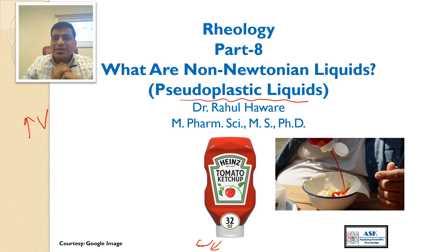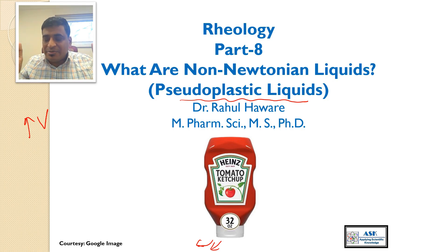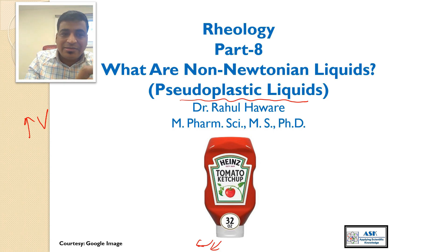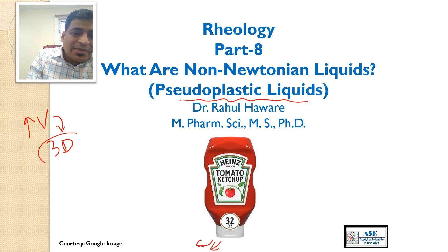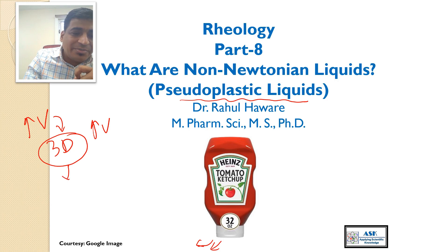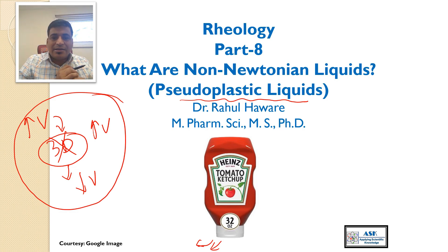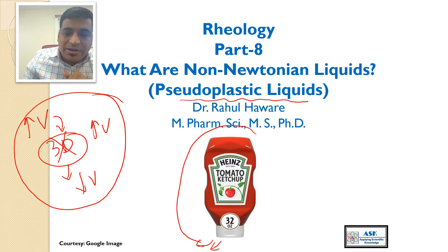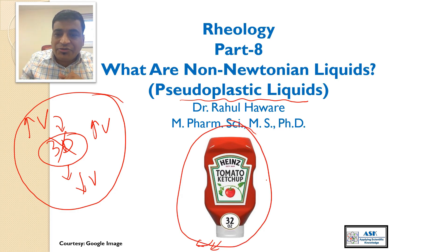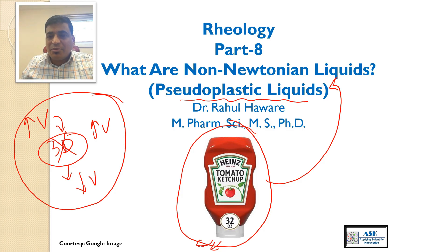When you are keeping it in the refrigerator, viscosity is increasing. In other words, it's creating a certain three-dimensional structure, and because of that three-dimensional structure viscosity is increasing. Once you are shaking or heating it hard, you are disrupting this three-dimensional structure and decreasing the viscosity. When you use tomato ketchup next time, think about pseudo-plastic liquids.